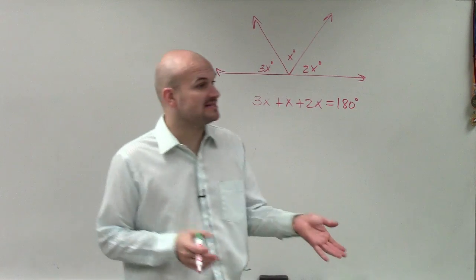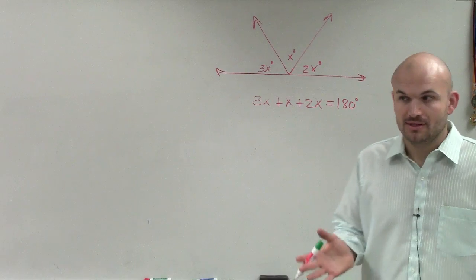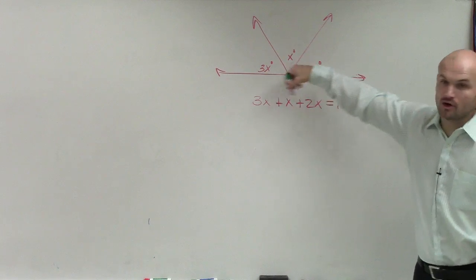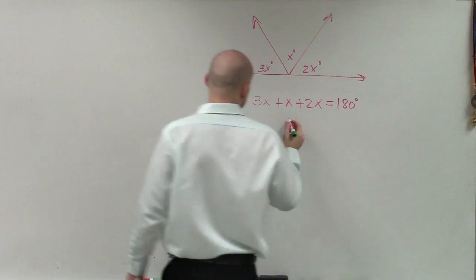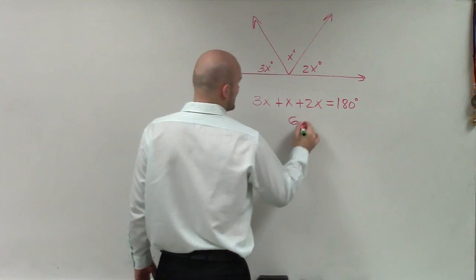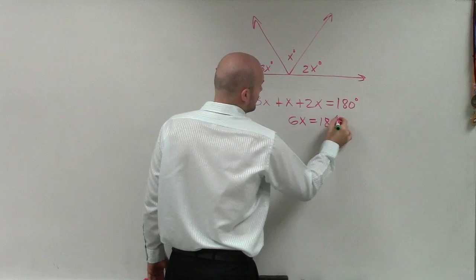Now, going back to your algebra 1, if I said solve an equation for x, well, that means we need to combine these. And we determine that these are all like terms, so we can combine them. So that becomes 6x equals 180 degrees.